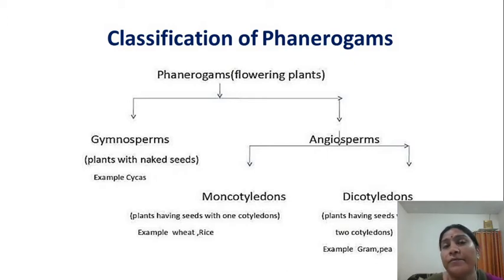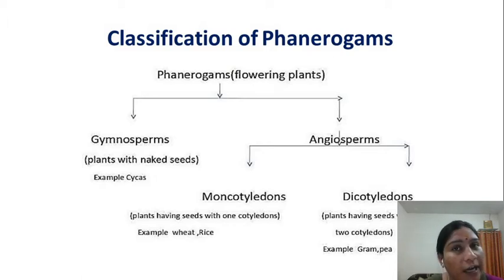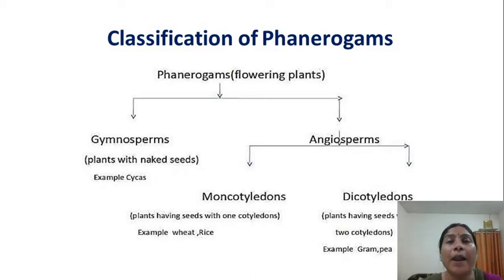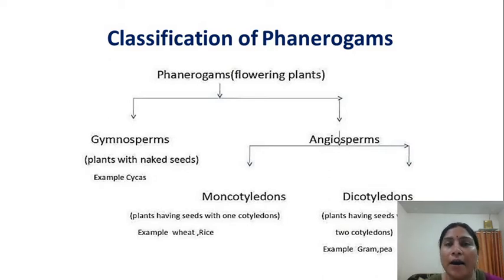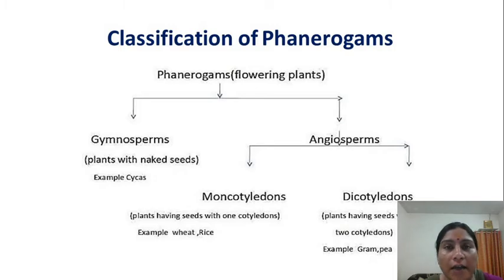What is meant by Gymnosperms? The word comes from 'Gymno' and 'Sperma' — Sperma means seed. In Gymnosperms, the plants have seeds but they are naked, meaning the seeds can be seen with the naked eye. The distinct feature of Gymnosperms is that the plants have naked seeds. Examples include Cycas and Pinus.